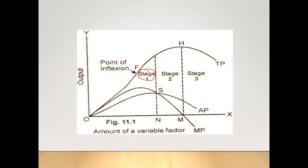Looking at the curve, you can see stage 1 ending at a certain point. Then stage 2 runs from point N to point M. Stage 2 ends here, and from that point onwards is stage 3. In stage 2, this curve reflects MP. This is AP — AP will never go below the x-axis; it will always remain above it. The maximum point of TP is here, after which TP is declining. At this particular point, AP is equal to MP — average product equals marginal product.